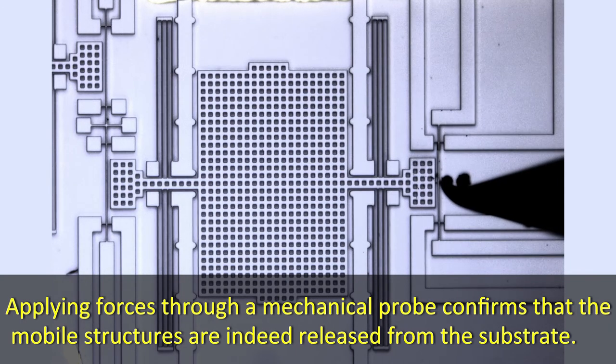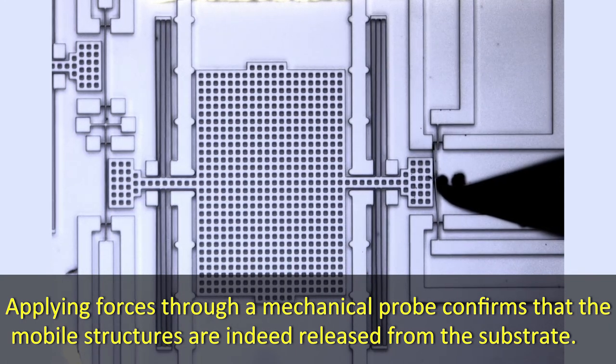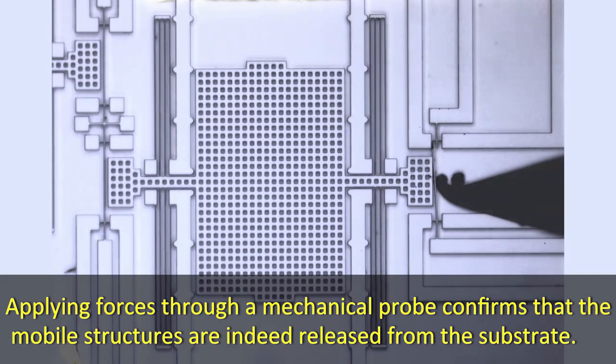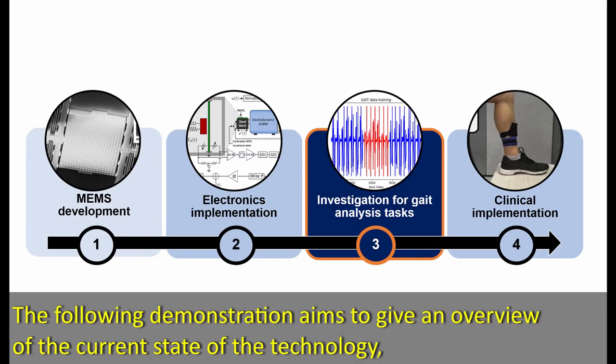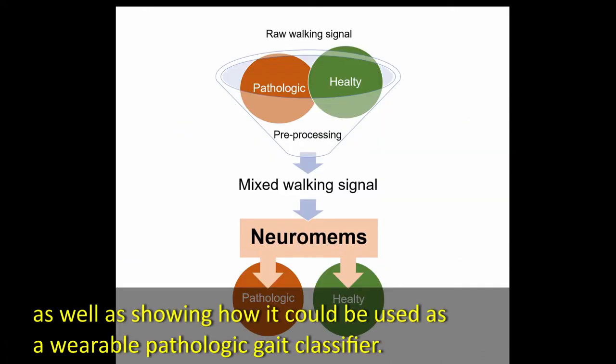Applying forces through a mechanical probe confirms that the mobile structures are indeed released from the substrate. The following demonstration aims to give an overview of the current state of the technology, as well as showing how it could be used as a pathologic gait classifier.